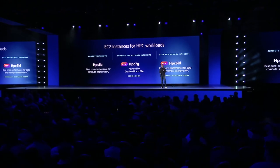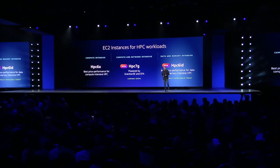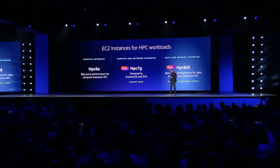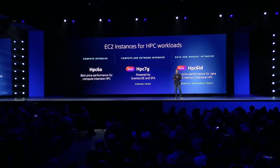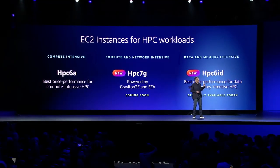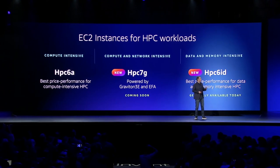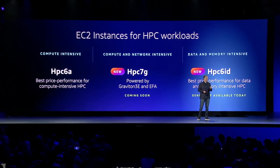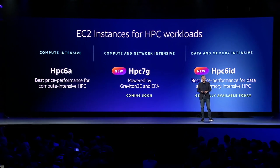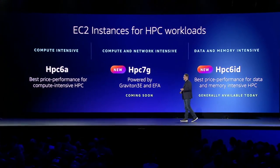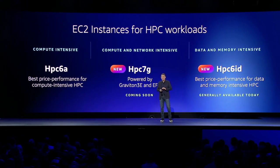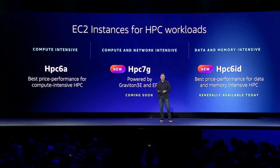We're announcing the new HBC6ID instances, designed to deliver leading price performance for data and memory-intensive HPC workloads with higher memory bandwidth per core, faster local SSD storage, and enhanced networking with Elastic Fabric Adapter. With 6A, 7G, and 6ID, AWS offers HPC instances with the best price performance for each of your specific workloads.